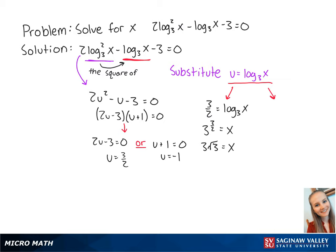Now we plug in u equals negative 1, so we get negative 1 equals the log base 3 of x. Using our logarithmic properties, this becomes 3 to the negative 1 equals x, which becomes 1 third equals x. So 3 times the square root of 3 and 1 third are the final answers for x.